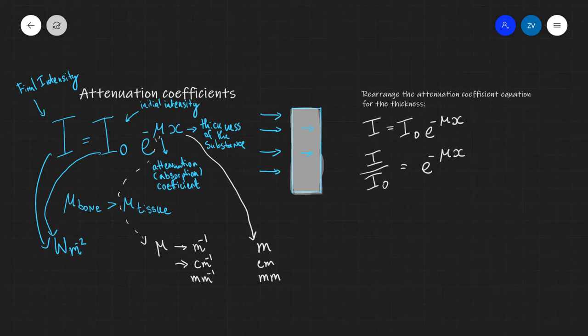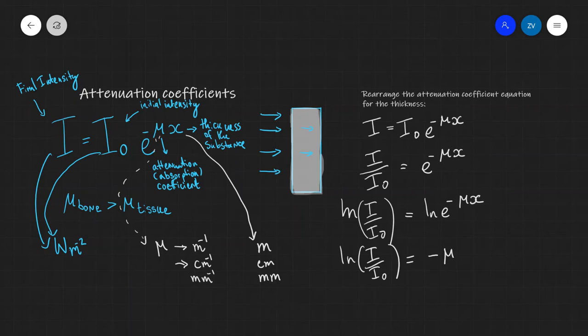Now we can remove the exponential by taking the natural log of both sides. So what we're going to do is ln(I/I₀), and that's going to be equal to the ln of e^(-μx). Now remember, the natural log and the exponential are inverse functions. So if we do ln of e to anything, what we're going to get is the actual exponent. So ln(I/I₀) will actually be equal to -μx.